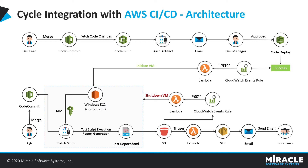A CloudWatch event rule is configured to look for the success message from CodeDeploy and trigger a Lambda function. The job of this Lambda function is to initiate the Windows EC2 instance, which is an on-demand instance that runs only when required. Inside this Windows EC2 instance there is a batch script configured with a list of commands that fetch the latest Cycle scripts from the repository and execute the test scripts using CLI commands.